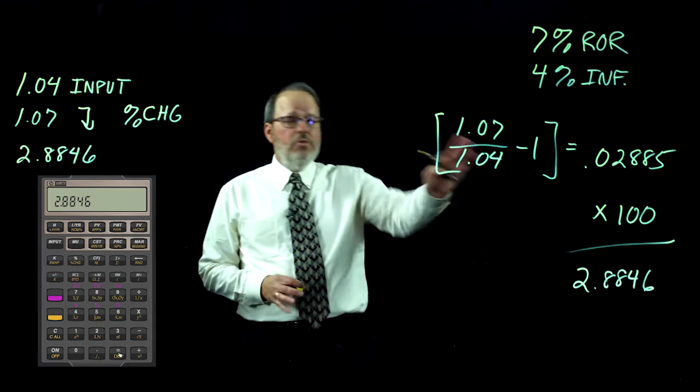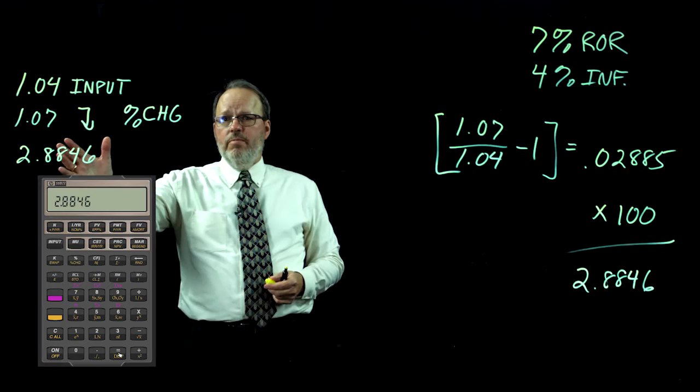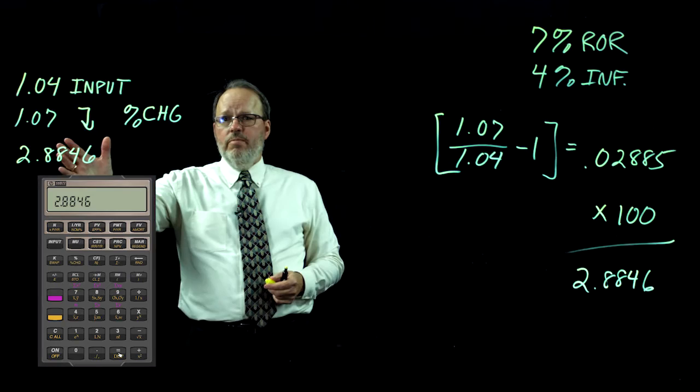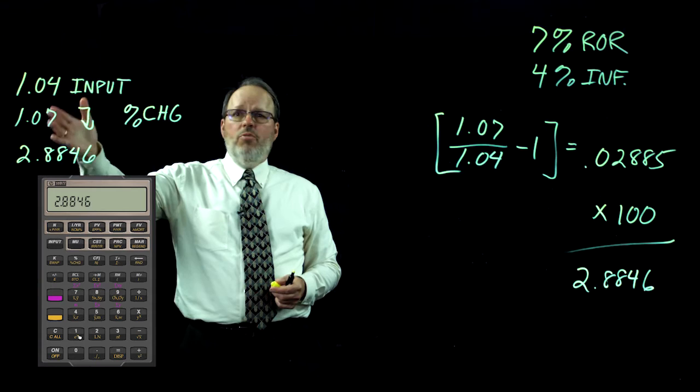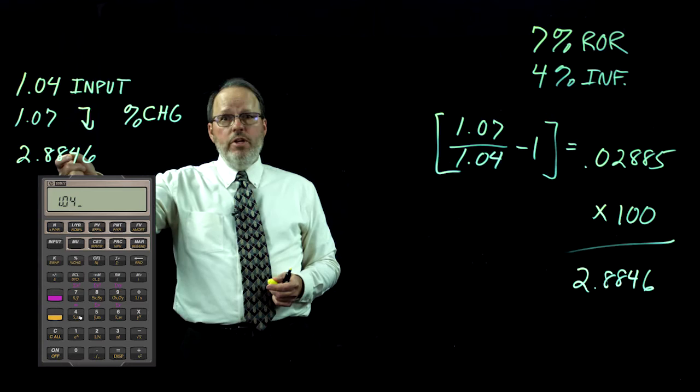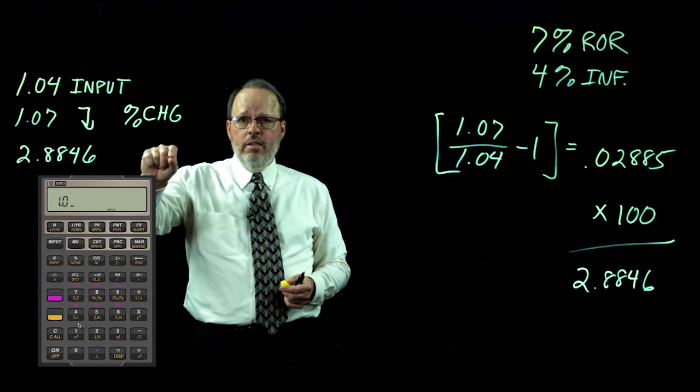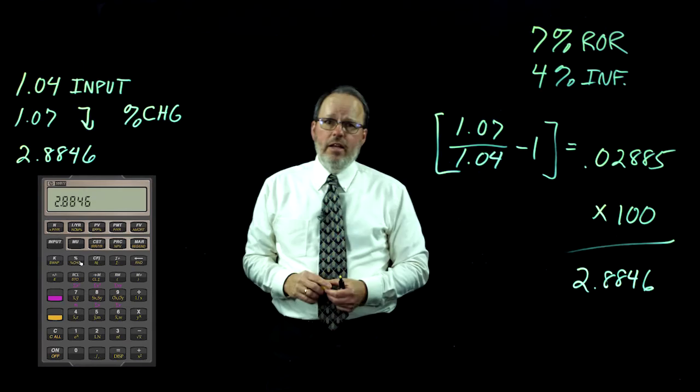There's a shortcut on your calculator. You start with the inflation rate: take 1.04 and hit the input key. Then put in 1.07, hit the downshift key, and then hit the percent change key. You will also come up with 2.8846. Either way will work and give you the inflation-adjusted return.